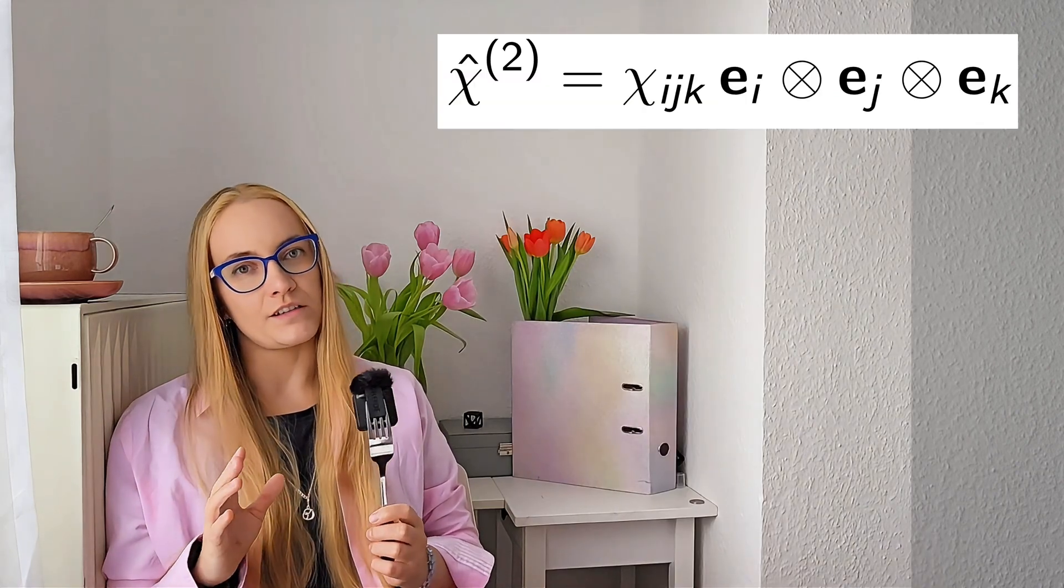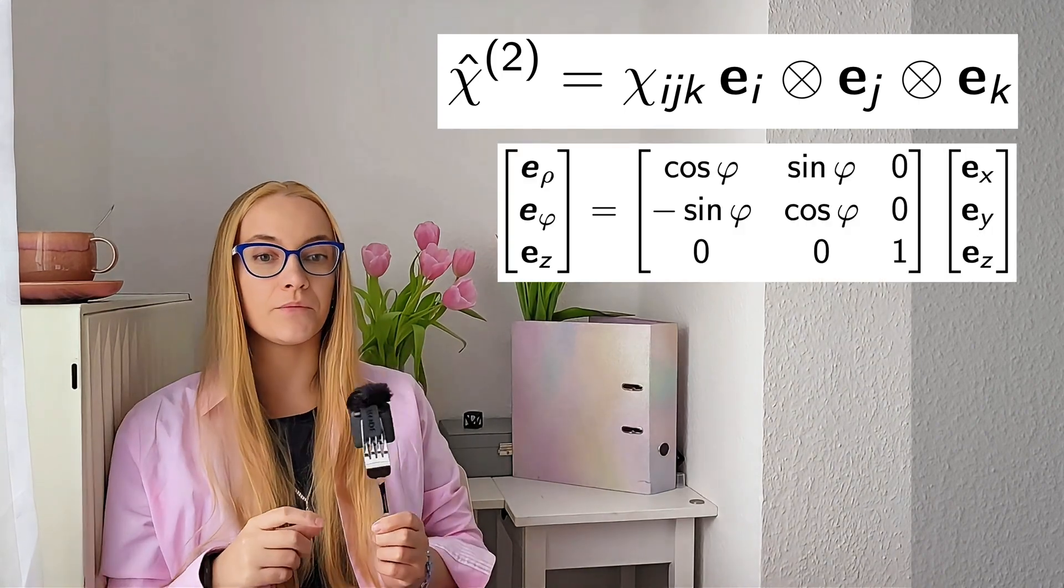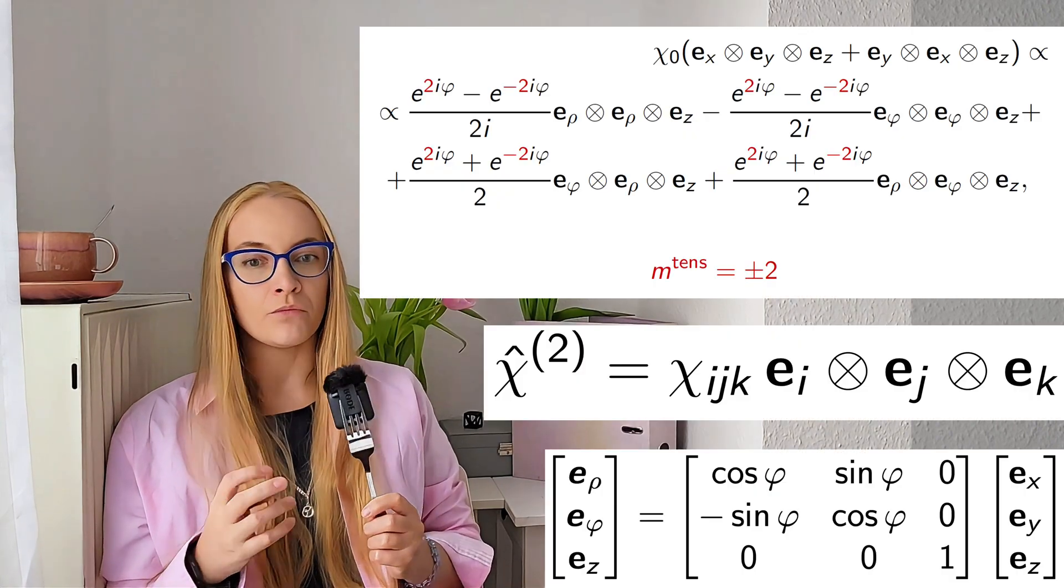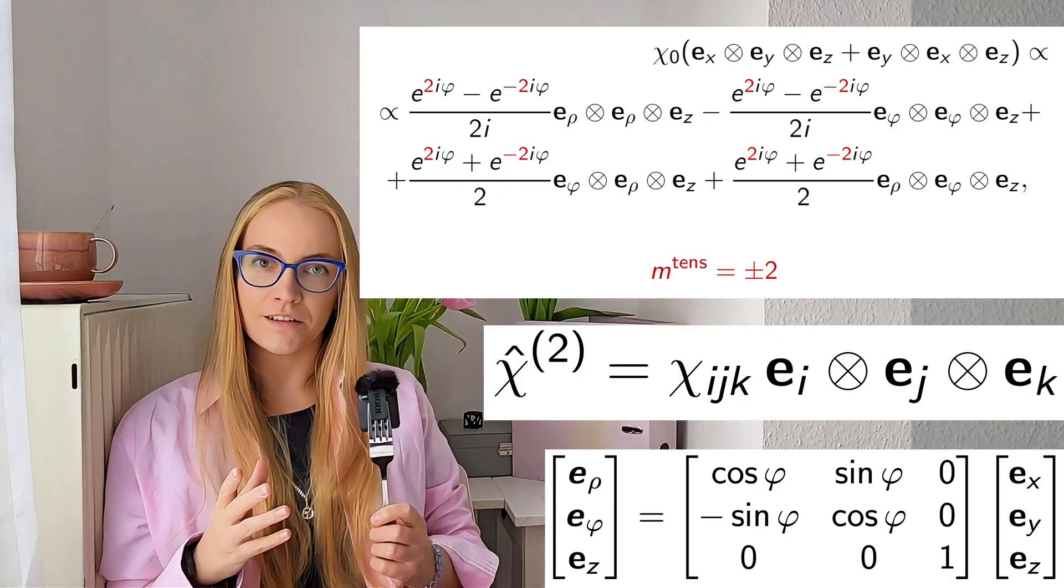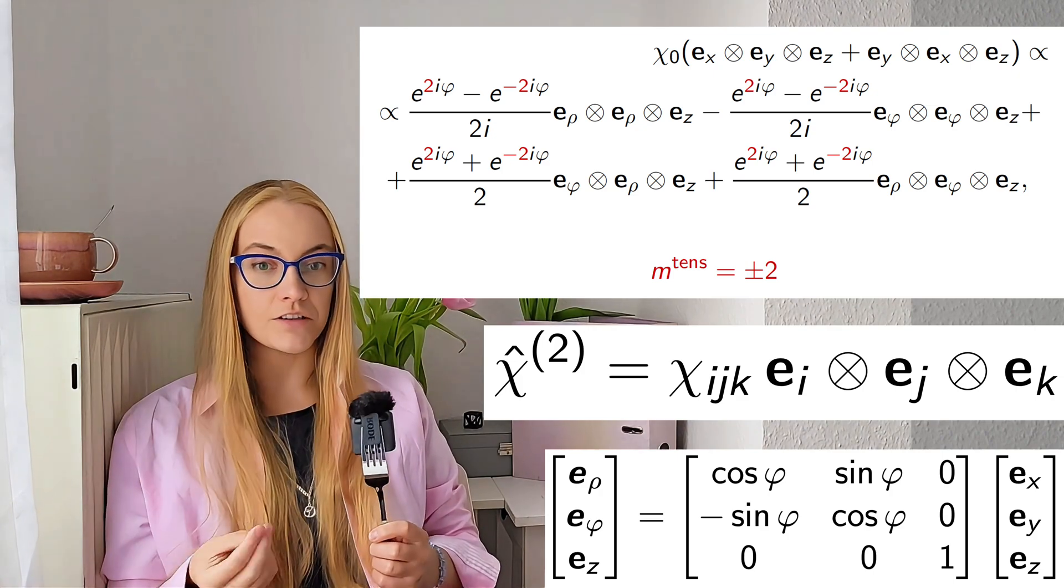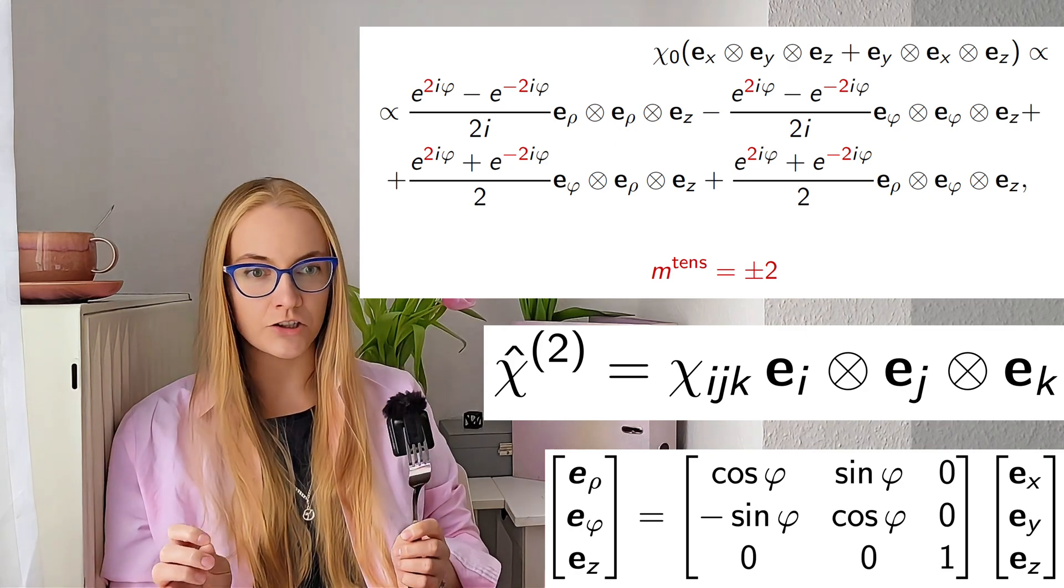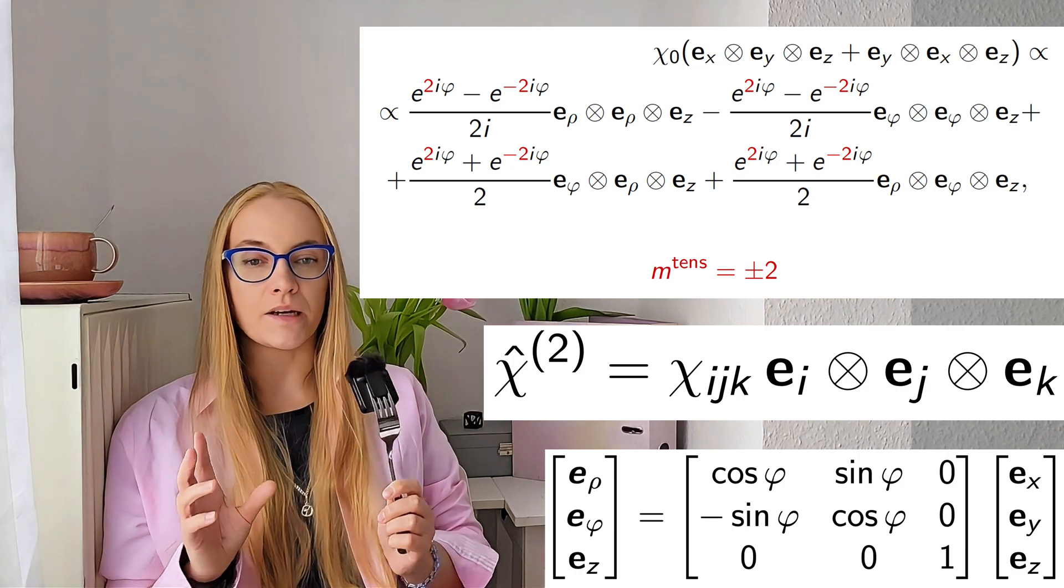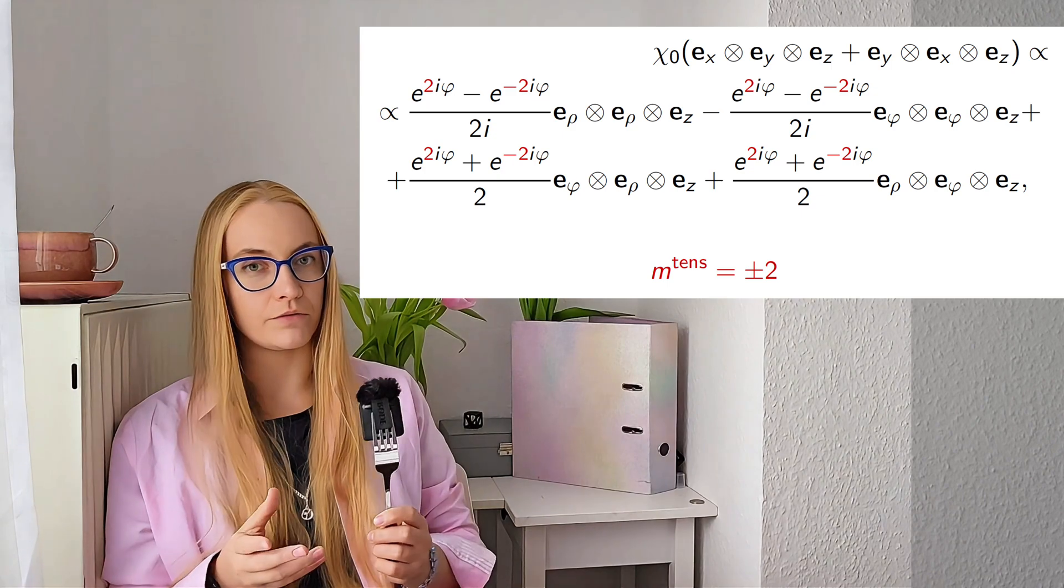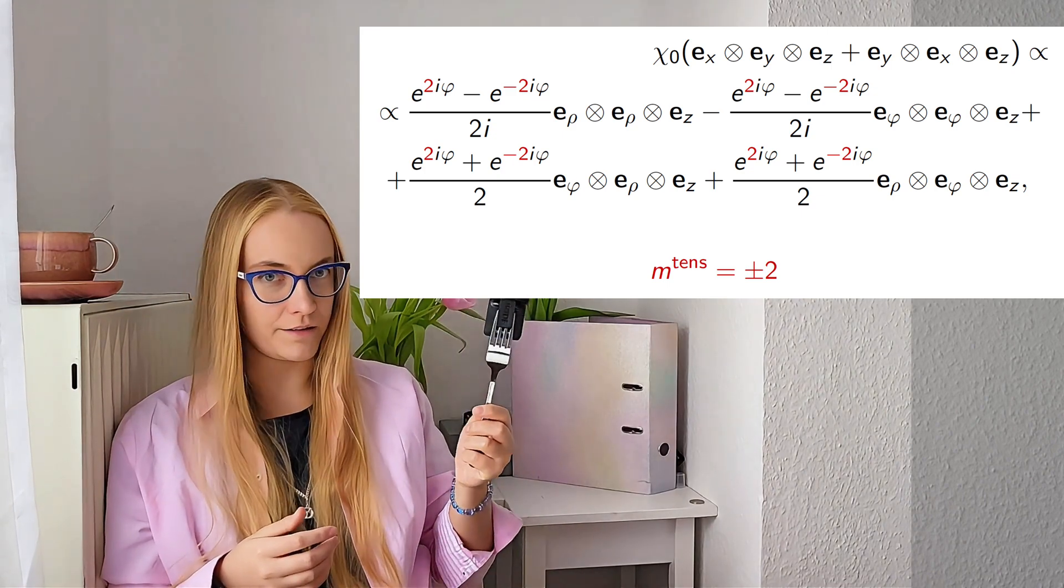We just need to write the tensor first in terms of tensor products of basis vectors as shown here, and then rewrite each basis vector into cylindrical coordinates as usual. Voila, we have the tensor in cylindrical coordinates. Cylindrical basis vectors do not change under rotations, so only phi-dependent part, sine and cosine functions, matter here. Let us rewrite them as exponentials and here basically we have an answer for total angular momentum projections because they are here in exponentials.